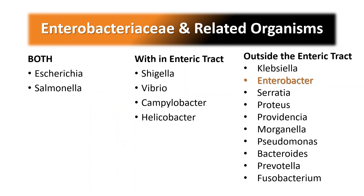Enterobacteriaceae and related organisms are further subdivided based on their location. Some bacteria are present within the enteric tract, some outside, and some in both. E. coli and Salmonella are found in both. Shigella, Vibrio, Campylobacter, and Helicobacter are within the enteric tract. Outside the enteric tract are Klebsiella, Enterobacter, Serratia, Proteus, Providencia, Morganella, Pseudomonas, Bacteroides, Prevotella, and Fusobacterium.